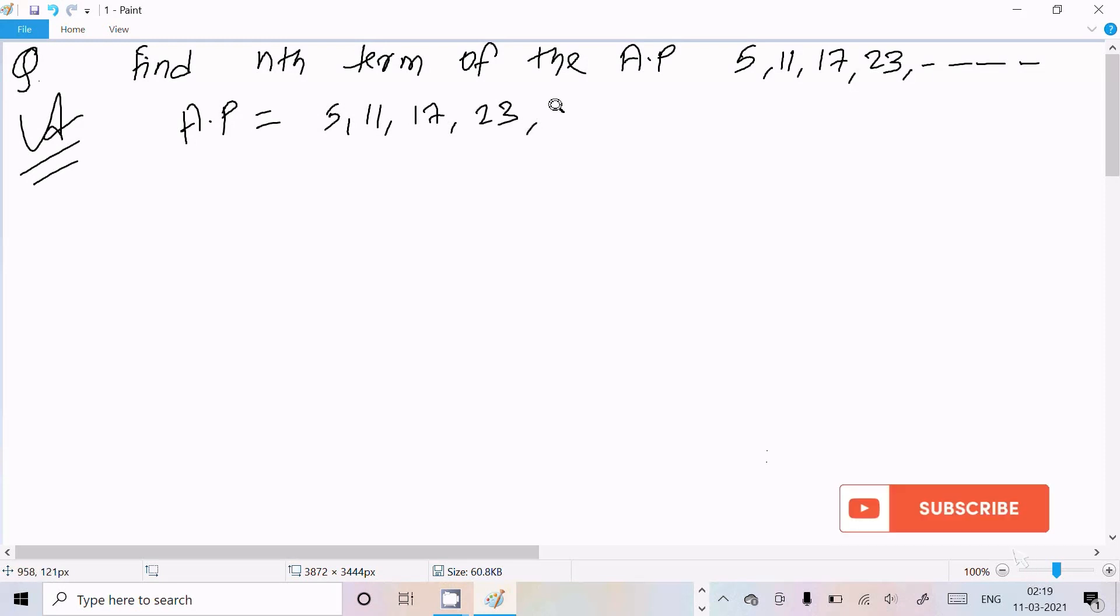And next is 29, and the numbers continue on. So we need to calculate the nth term. We know the formula: Tn = a + (n-1)×d. So here, a is the first term.